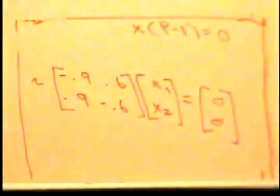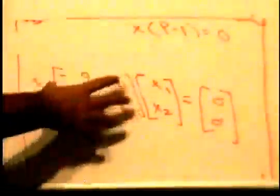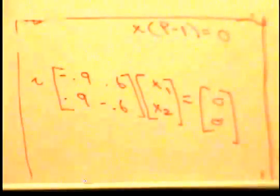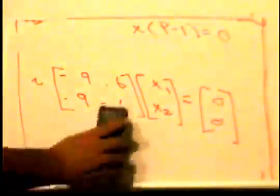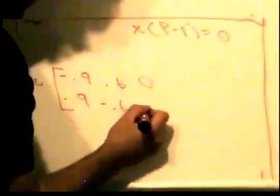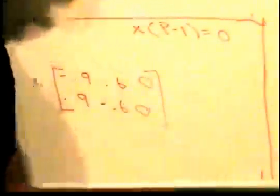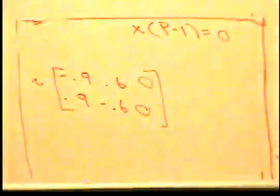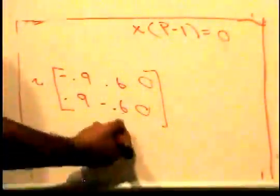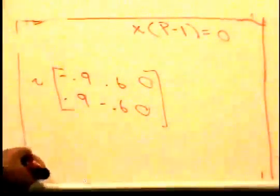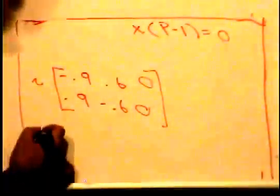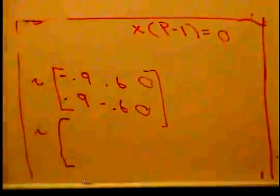Now if you remember how to solve this kind of system, you have to place the zeros here and row reduce. I'm going to assume you already know how to row reduce this elementary matrix. When you row reduce it, you get the answer.